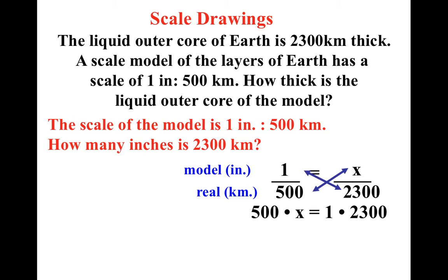So when I cross multiply, I get 500 times x equals 2,300. When I divide by 500 and divide by 500 with my algebra skills, I end up getting x equals 4.6 inches. So if you want to make a really good model, you needed to have your earth's core be 4.6 inches thick.